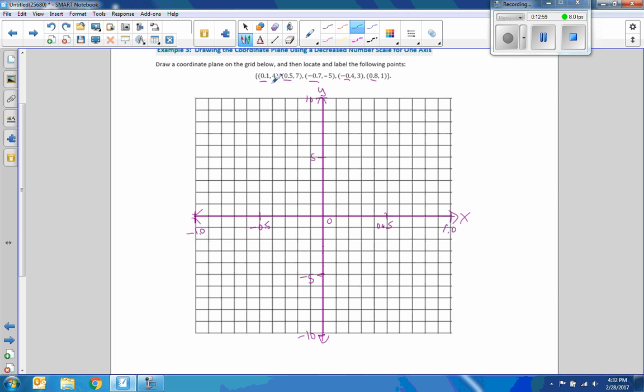And now I'm going to graph. So 0.1, 4. 0.5 is right here. 0.7 is right here. 0.5, 7. Negative 0.7. Negative 0.5. Negative 0.6, negative 0.7. Negative 0.5. And then negative 0.4 is right here. So I go left to negative 0.4. Up 1, 2, 3. Negative 0.4, 3. And then 0.8 comma 1. So 0.8 is here. 0.8 comma 1. So there are my points. The proper unit of measurement of my scales.